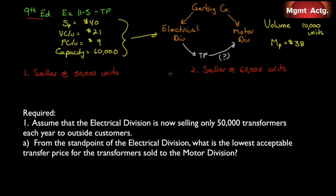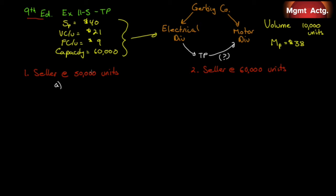Requirement 1A: assume the electrical division is now selling only 50,000 transformers to outside customers. From the standpoint of the electrical division, what is the lowest acceptable transfer price? We have excess capacity — we can make 60,000, currently at 50,000, and the motor division wants 10,000. So the transfer price must be greater than or equal to variable cost per unit: $21. Anything above that contributes to margin, and since fixed costs are fixed, it goes right to the bottom line.